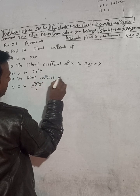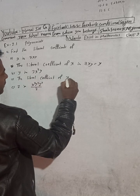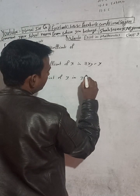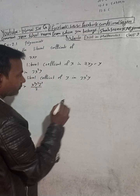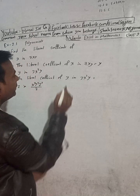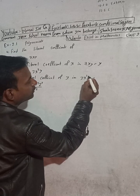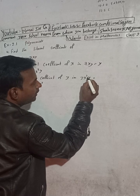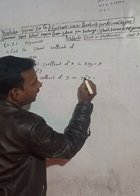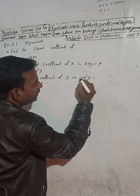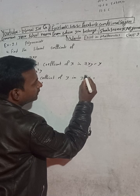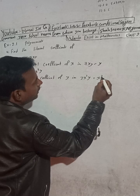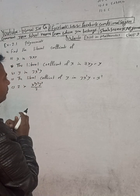Now the literal coefficient of y — literal coefficient of y means accept this y, exclude it. Three is the numerical coefficient, and x squared is the literal coefficient of y.